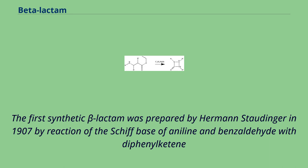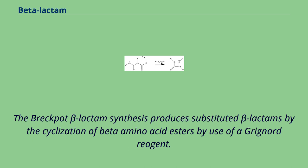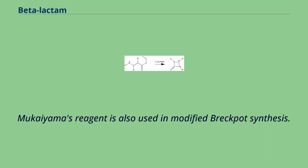The first synthetic beta-lactam was prepared by Hermann Staudinger in 1907 by reaction of the Schiff base of aniline and benzaldehyde with diphenylketene in a [2+2] cycloaddition. Many methods have been developed for the synthesis of beta-lactams. The Breckpot beta-lactam synthesis produces substituted beta-lactams by the cyclization of beta-amino acid esters using a Grignard reagent. Mukaiyama's reagent is also used in a modified Breckpot synthesis.